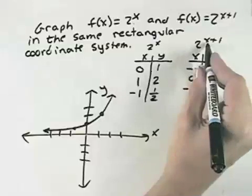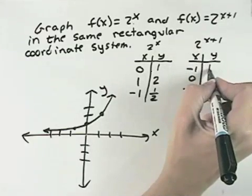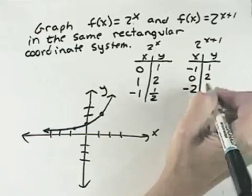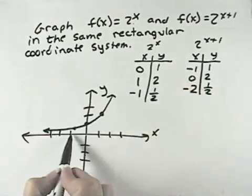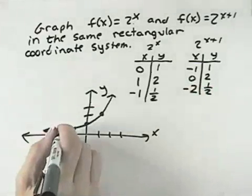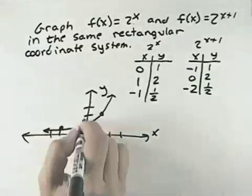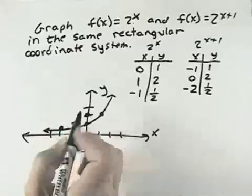In this equation, when x is negative 1, negative 1 plus 1 is 0, so 2 to the 0 is 1. When x is 0, we get 2 to the 1st power, which is 2. When x is negative 2, we get 2 to the negative 1st power, which is 1 half. So what happens is we move over to x equals negative 2 to get to the point that's 1 half. When x is 0, we're all the way up at 2, and when x is at negative 1, we have the point 1.